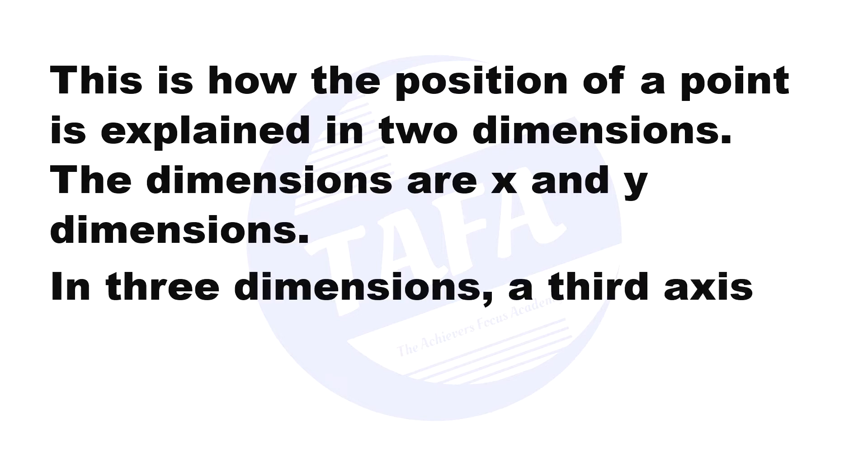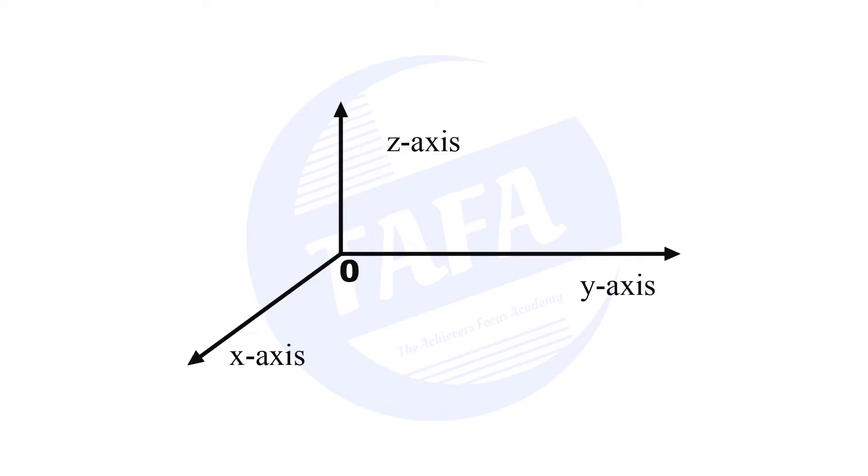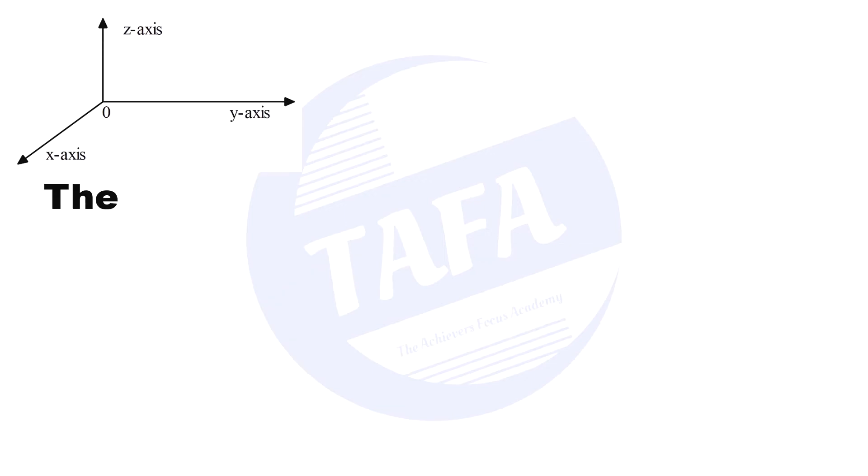In three dimensions, a third axis is introduced: the z-axis. This is shown in the diagram. You can see we have the x-axis, then there is the y-axis, and then there is the z-axis, which is the vertical axis.